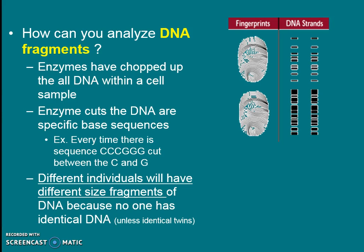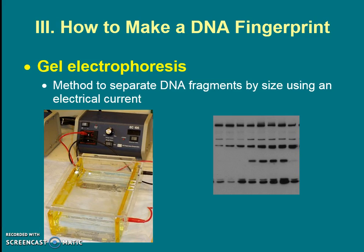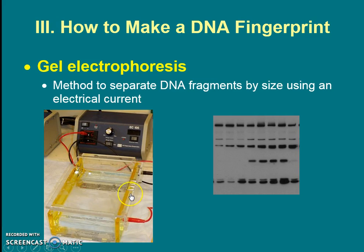DNA fingerprints are even more accurate than regular fingerprints. Now that I have the chopped-up DNA, I'll use a technique to separate those fragments across an electrical current so I can see the different sizes. To make the DNA fingerprint, I'll use a technique called gel electrophoresis. It has the word 'electro' in it because it uses electricity to separate those DNA fragments by size. The 'gel' component refers to the jelly-like substance we put the DNA on, and it creates something that looks like banded patterns.